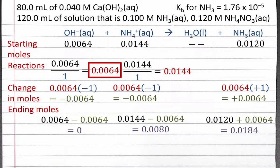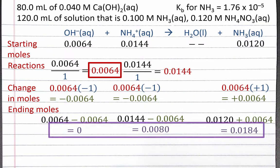Now we need to consider what's left over in solution and how to calculate pH as a result. We have ammonium, a weak acid, and ammonia, its conjugate base, still in solution. So we still have a buffer solution, and the moles of ammonium and ammonia are close enough that we should be able to use the Henderson-Hasselbalch equation to calculate the pH of our buffer solution.